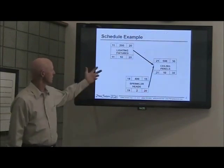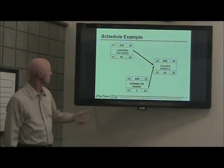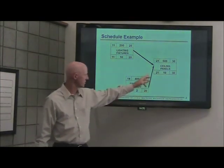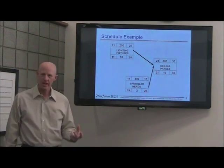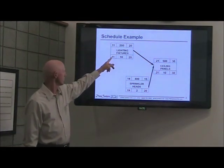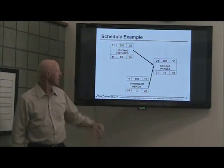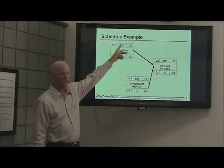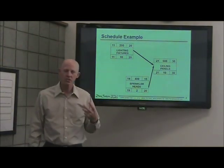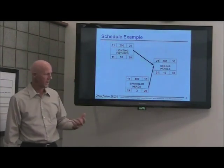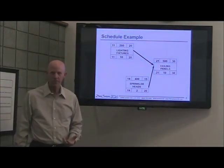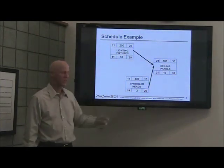Let's take a look at a real small piece of a major schedule. I'm showing three tasks: lighting pictures, sprinkler heads, and ceiling panels. The way this is set up, you have your early start, late start, early finish, late finish, duration, task number, and the name of the task. This is a pretty standard nomenclature to use for task boxes when you do scheduling. It is not the default of Microsoft Project, but it's easy to change so it looks just like this.